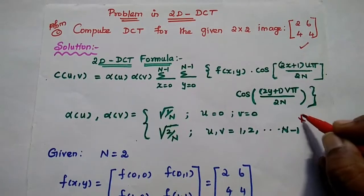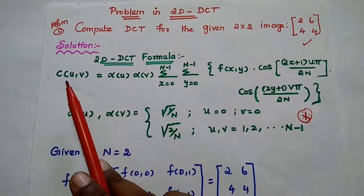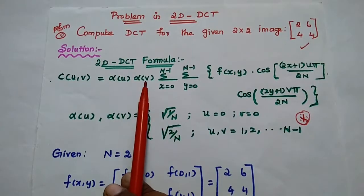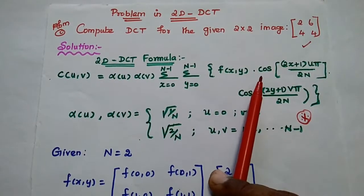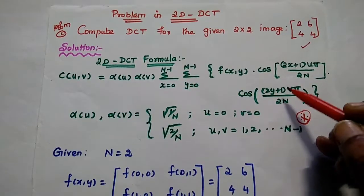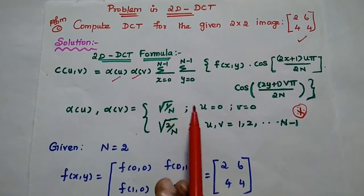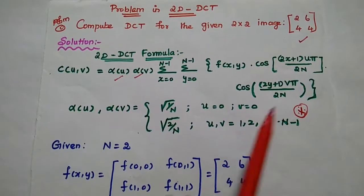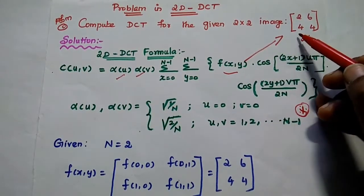Here is the formula. In the solution, first we need to write the DCT formula. The transform domain is represented as C(u,v), where u and v are the transform domain coefficients. That is equal to α(u)·α(v) · Σ(x=0 to N−1) Σ(y=0 to N−1) f(x,y) · cos[(2x+1)uπ/2N] · cos[(2y+1)vπ/2N]. Here α(u) and α(v) equal √(1/N) when u=0 or v=0, and √(2/N) when u,v are from 1 to N−1. Here f(x,y) represents the given matrix — that is the image data.